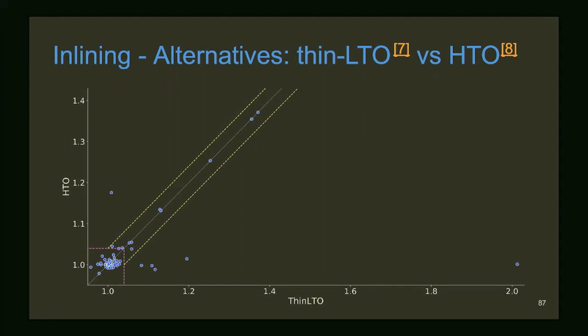We added Clang attributes for all kinds of LLVM attributes. This comparison against the LLVM test suite shows thin LTO versus our approach (HTO). In many cases we can replicate the speedup that thin LTO gets from function inlining and annotation, but much faster at compile time. On some benchmarks thin LTO is better; on others our approach wins. This isn't finished yet but shows the direction — you can compare this against thin LTO or LTO.